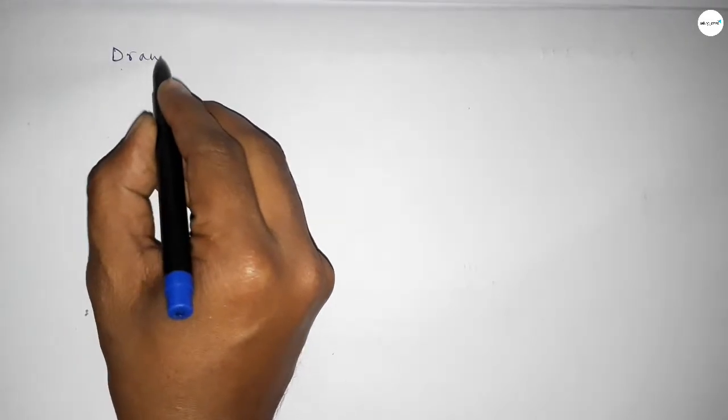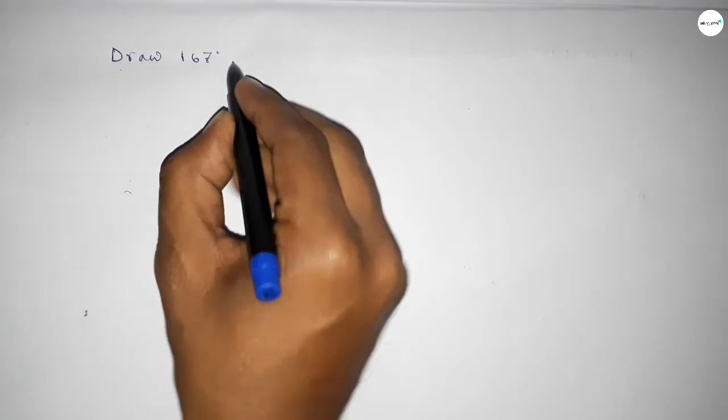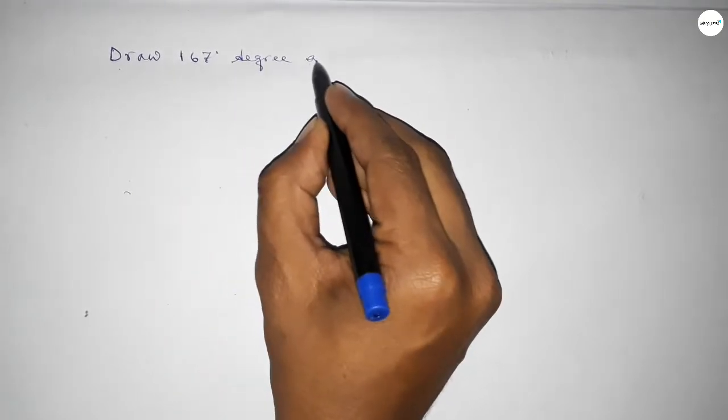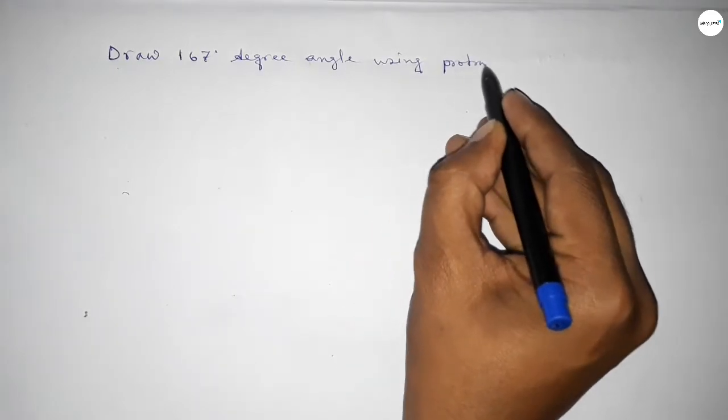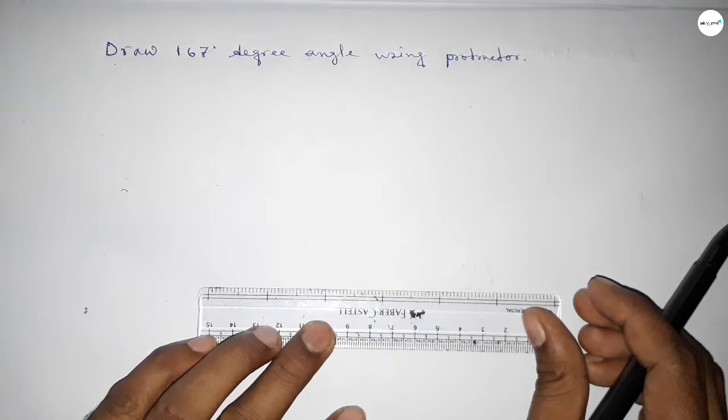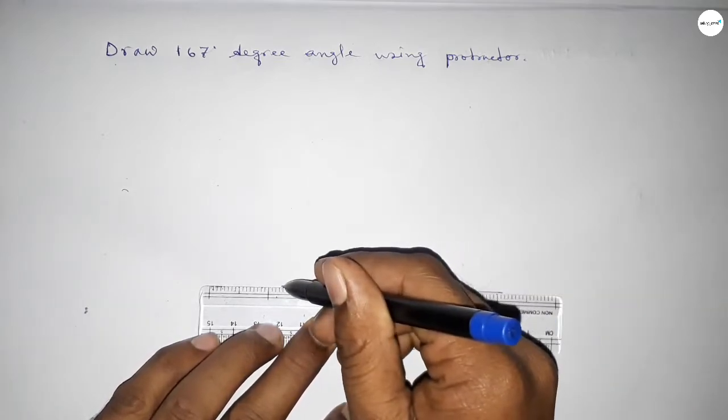Hi everyone, welcome to SSJR classes. Today in this video we have to draw a 167 degree angle by using a protractor. So let's start the video. First of all, we have to draw here a straight line of any length.